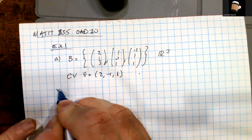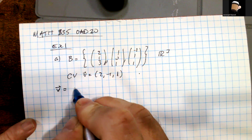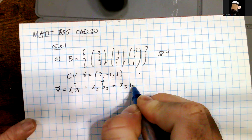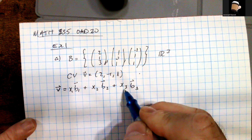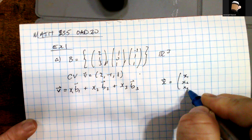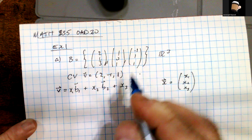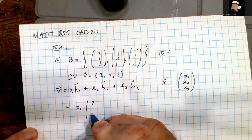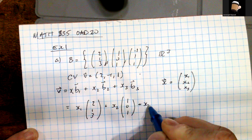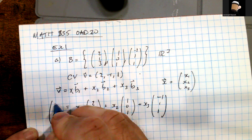Let's set up the problem. We have a vector V equal to X1·B1 + X2·B2 + X3·B3, so we're looking for the coordinates X1, X2, and X3. Writing this out: X1·(2,1,3) + X2·(1,0,1) + X3·(-1,1,1) equals our vector V = (2, -1, 1).